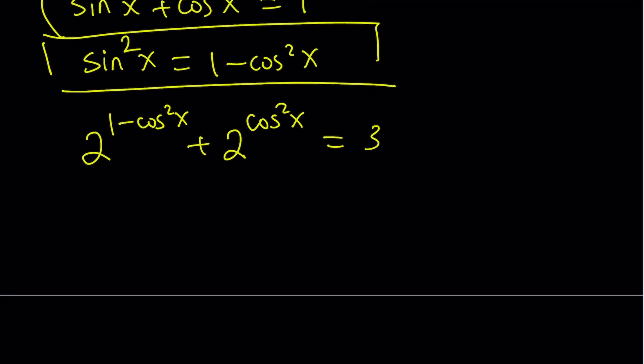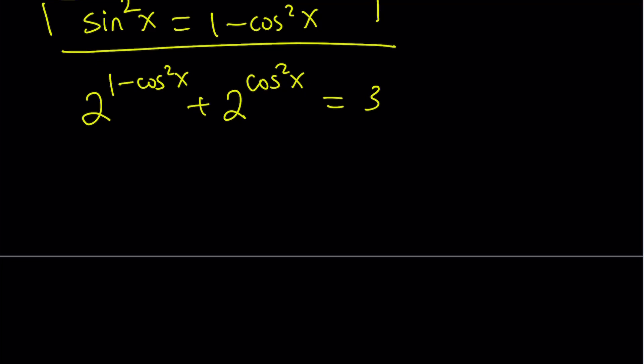Alrighty? Okay, great. So now we can go ahead and write the 2 to the power 1 minus cosine squared as 2 divided by 2 to the power cosine squared x. And this is just as is. Same one. And now notice that 2 to the power cosine squared x is repeating. So I can basically use substitution here.